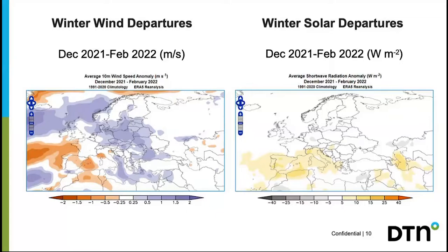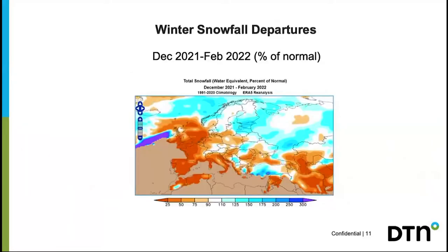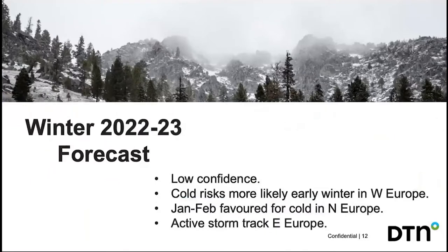Solar radiation, as expected from this pattern, was above average especially for Spain and Italy, though in Spain this was tempered by relatively poor winds throughout winter. Given the above-average temperatures and below-normal precipitation in some areas, there was less snow than an average year. Western and northwestern Europe were short of snow compared to average, but the Alps were near normal except for the Italian Alps.